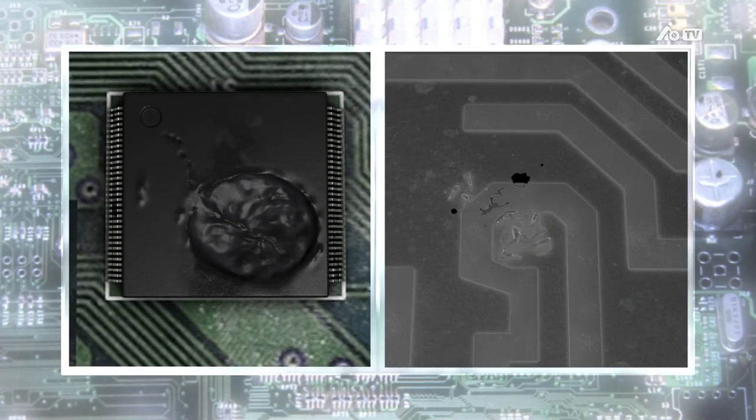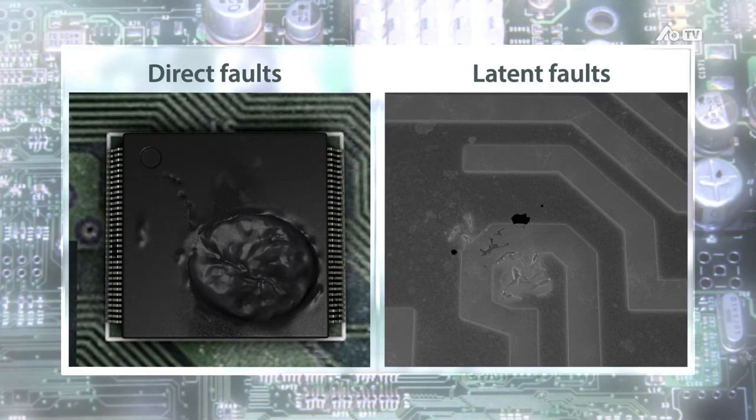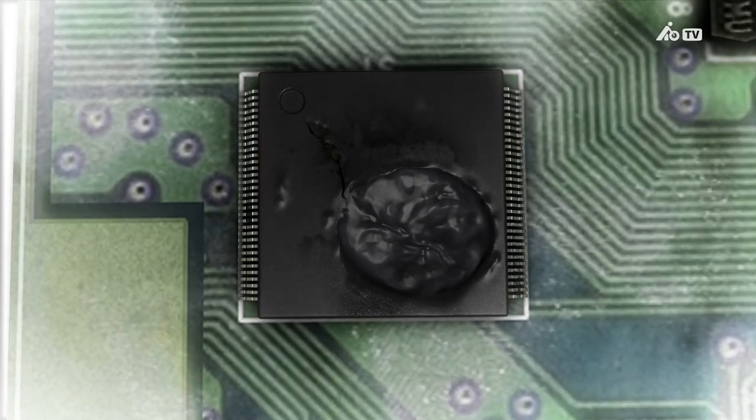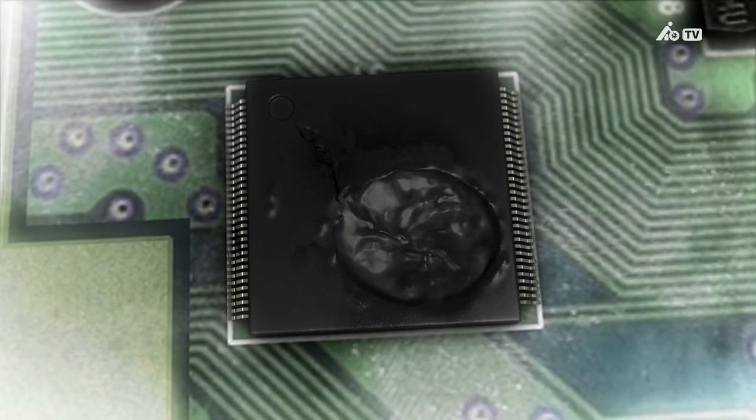These different types of damage are referred to as direct faults and latent faults. With a direct fault, the device is either visibly damaged or its function is impaired.